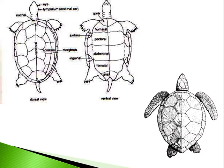The carapace is somewhat brownish, heart-shaped, and formed of horny scutes or plates. The carapace and the plastron are joined by ligaments — there is no bony connection between them, but they are joined by ligaments.